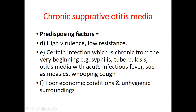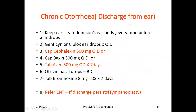Other predisposing factors for chronicity: when immunity is low and bacterial infection is very strong; chronic infections from the beginning such as syphilis or tuberculosis; otitis media with acute infectious fevers such as measles and whooping cough; and poor economic conditions and unhygienic surroundings.